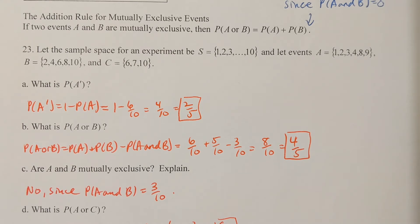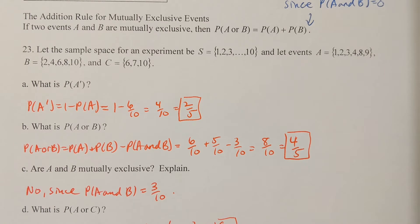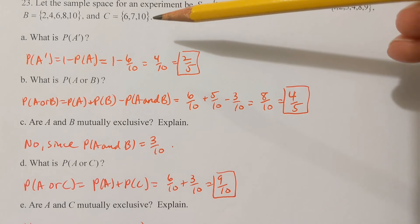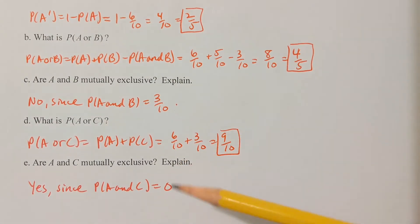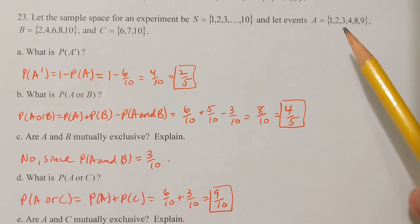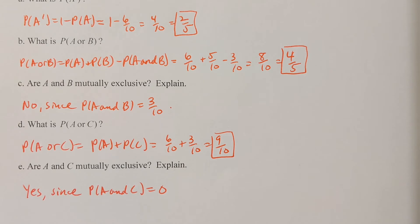Part C: are A and B mutually exclusive? No, they're not mutually exclusive since the probability of selecting something in both A and B is 3 over 10. We need that probability to be 0 for them to be mutually exclusive. Part D: what is the probability of A or C? The probability of A is 6 over 10, the probability of C is 3 over 10, and there's nothing in common to both A and C, so we subtract 0, giving 9 over 10. Part E: are A and C mutually exclusive? Yes, since the probability of A and C equals 0.